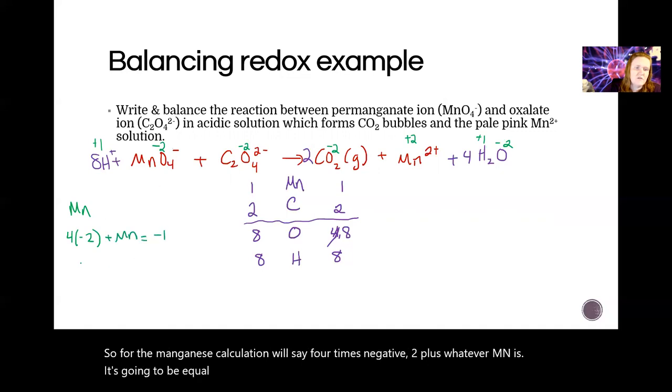So for the manganese calculation, we'll say four times negative two plus whatever Mn is, it's going to be equal to the charge, which is negative one. So we're going to add eight to both sides, and you get Mn is plus seven over there.